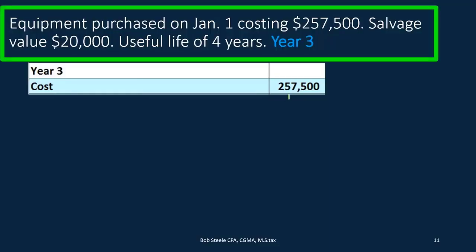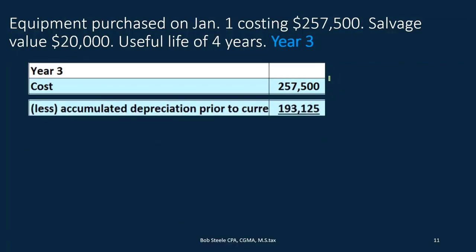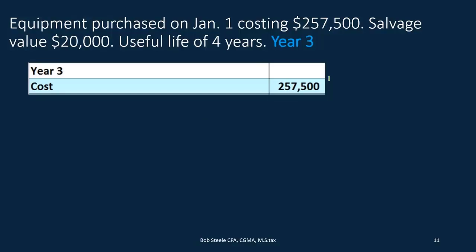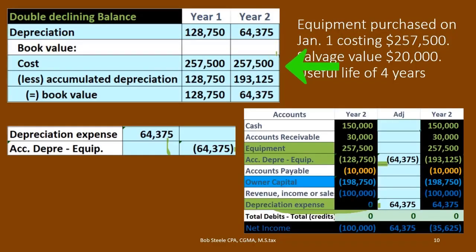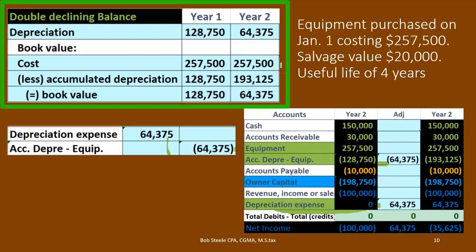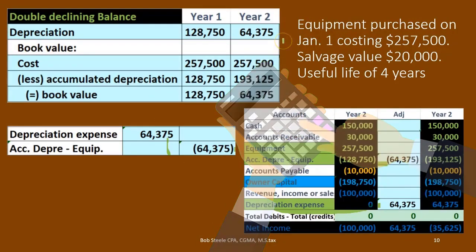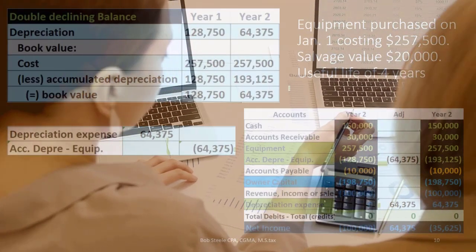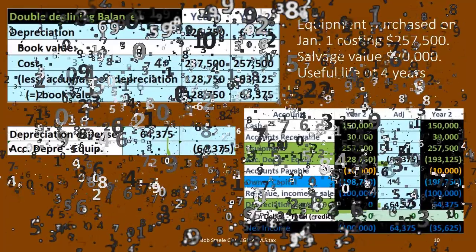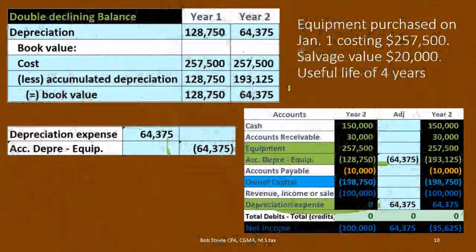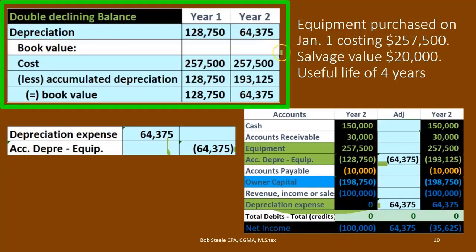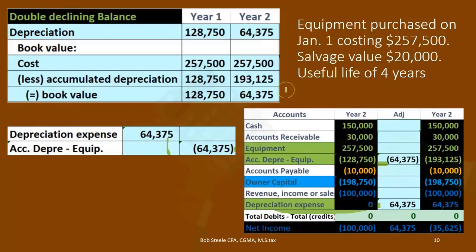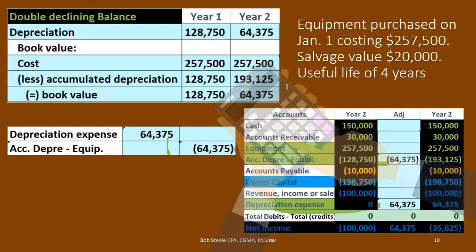For year three, we again take cost less accumulated depreciation before the current year. The accumulated depreciation from through year two is $193,125, giving a book value of $64,375 before year-three depreciation. You'll want to set up a well-organized table for these calculations, because exam questions often ask for year two or three — you need to calculate not just the depreciation expense but also the accumulated depreciation and book value for any given period.